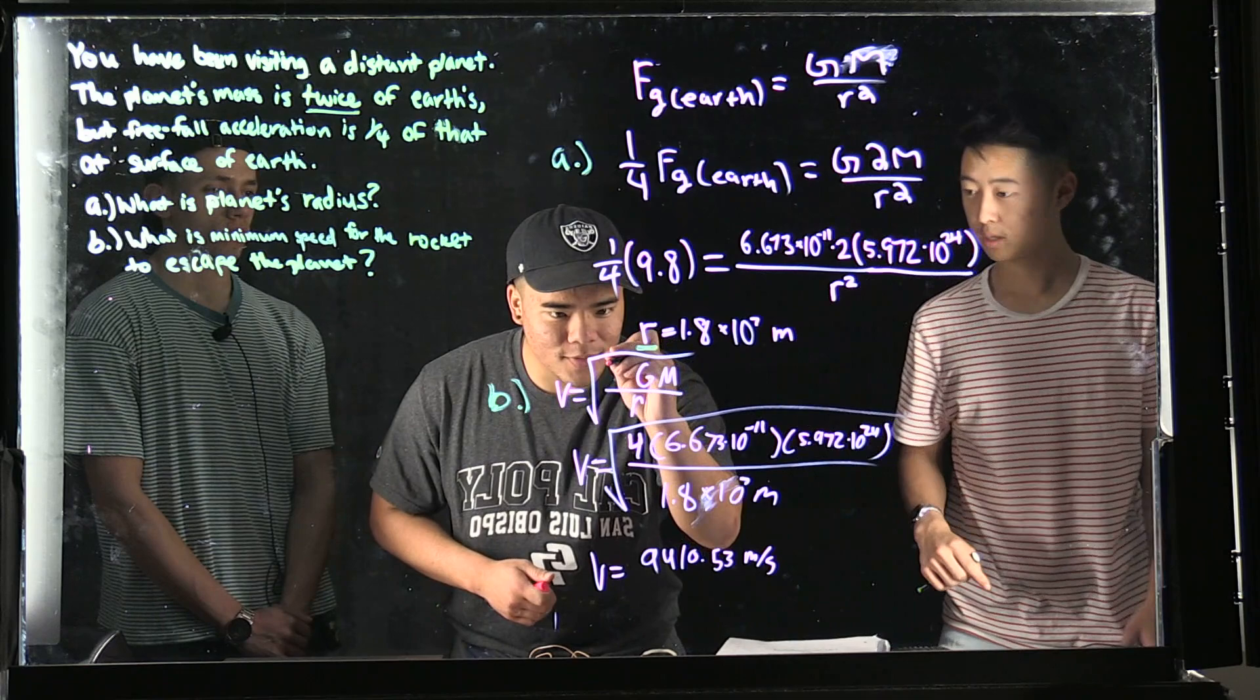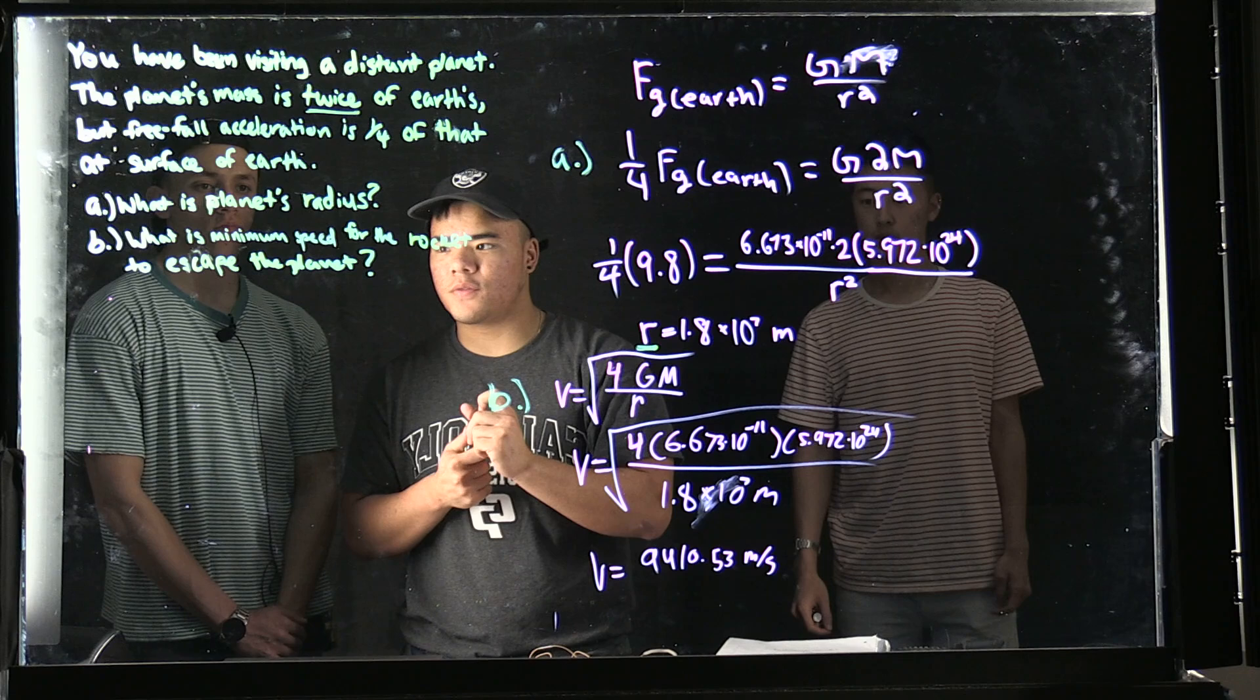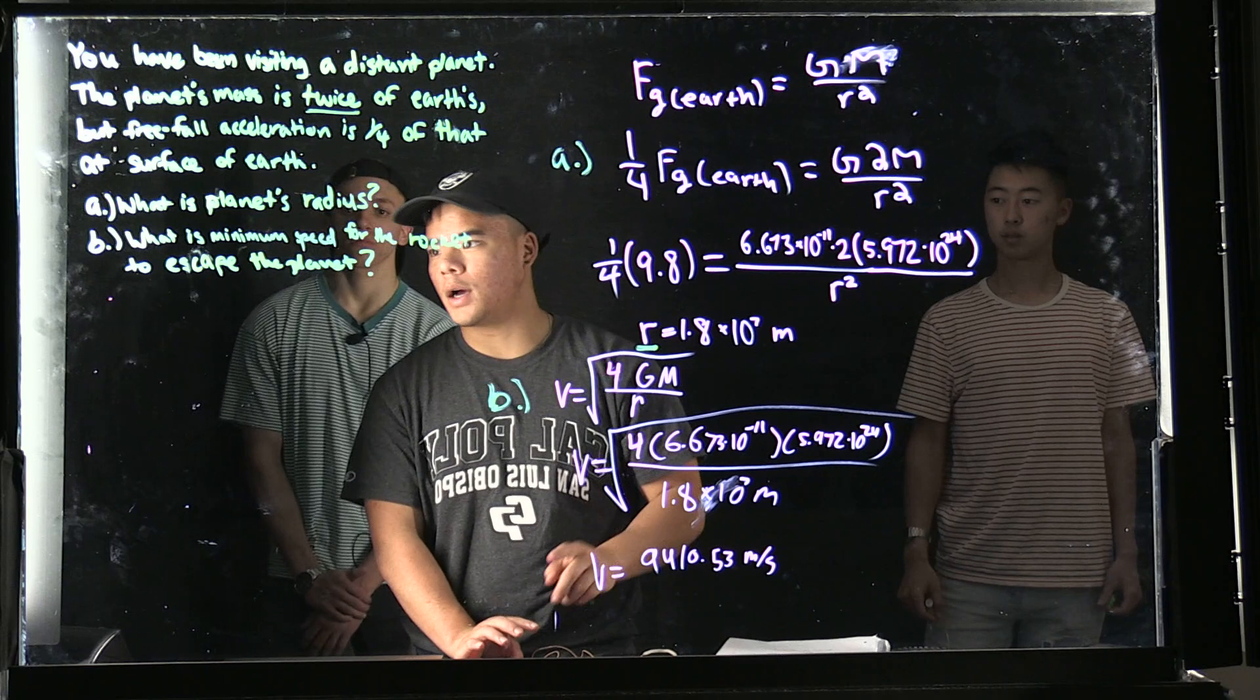Okay, so to solve Part B—what is the minimum speed for the rocket to escape the planet—we needed the radius, which we found in Part A.